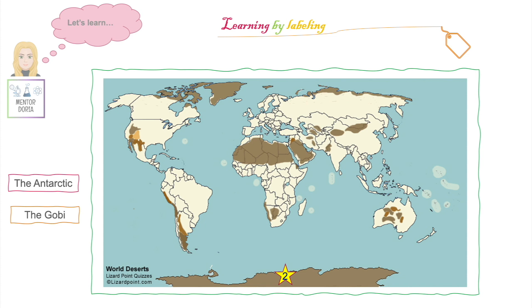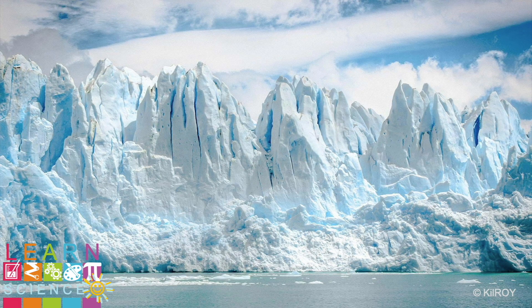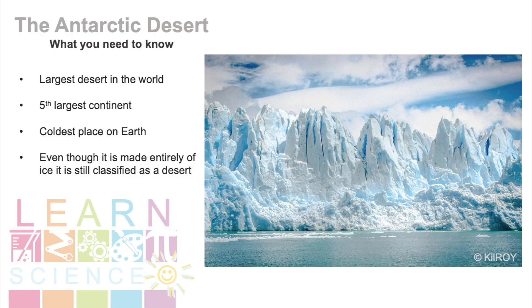Now we know about the Sahara and the animals we find there, let's move on to location 2. The Antarctic Desert is very different from the Sahara as it is a polar desert. The Antarctic Desert is the largest desert in the world. Antarctica is the fifth largest continent and it nearly doubles in size during the winter time when the sea ice expands. It is also the coldest place on earth. Even though the continent is entirely made of ice, it is still classified as a desert as there is so little moisture that falls from the sky.